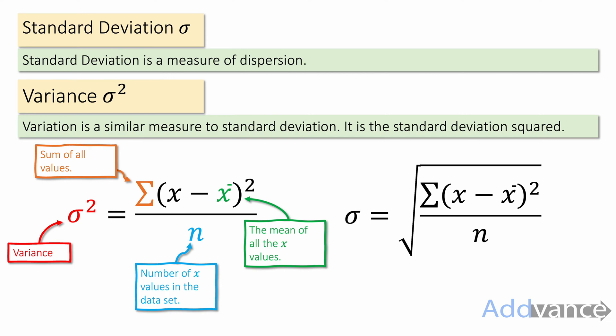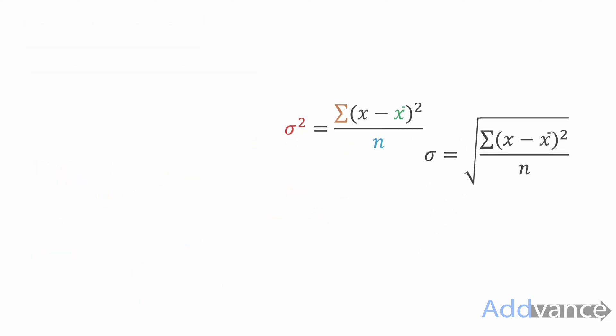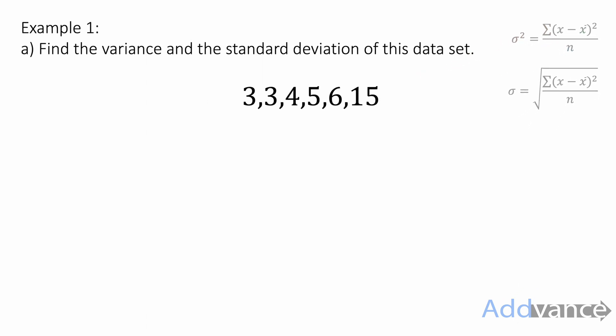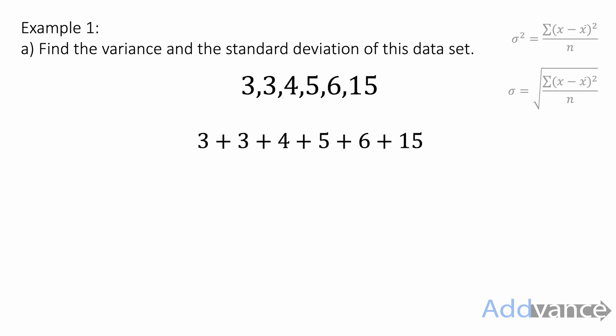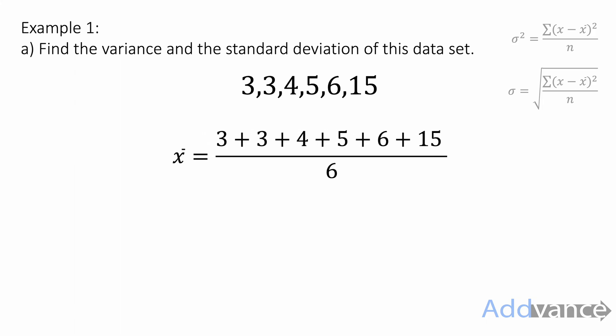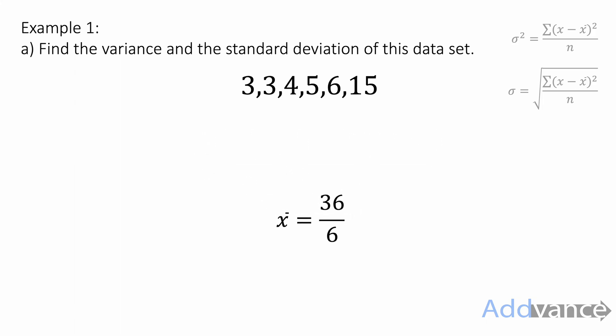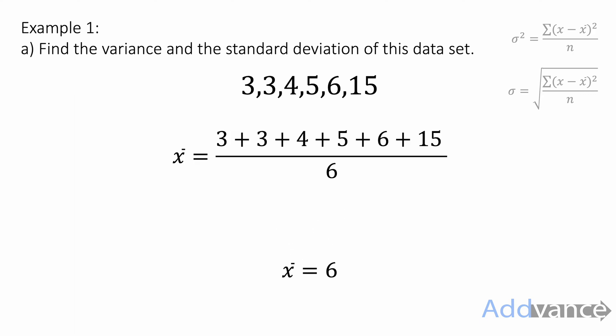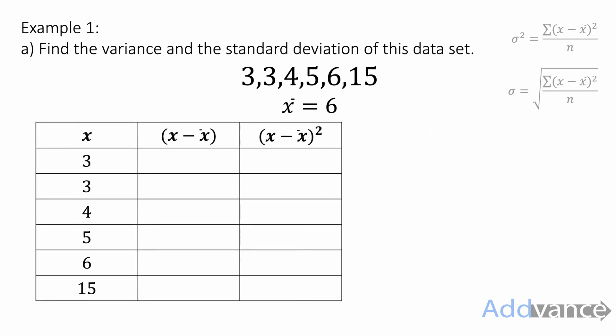Let's have a look at an example. Find the variance and standard deviation of this data set: 3, 3, 4, 5, 6, and 15. The first thing we're going to do is find the mean by adding them all together and dividing by the number of numbers. We get 36 divided by 6, which is 6. The mean, x̄, is 6 — remember that symbol.